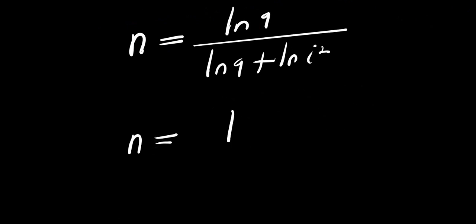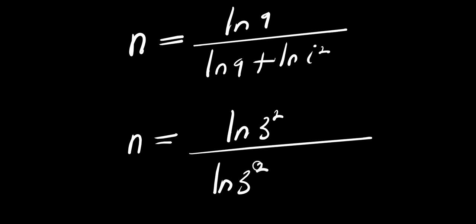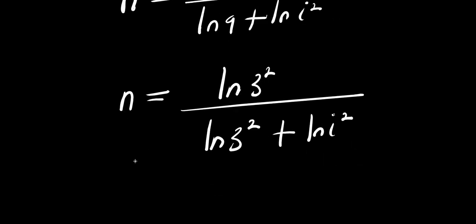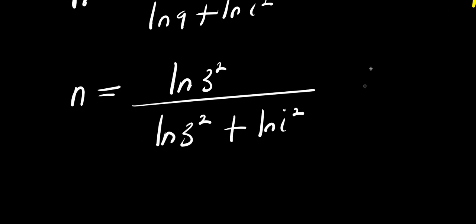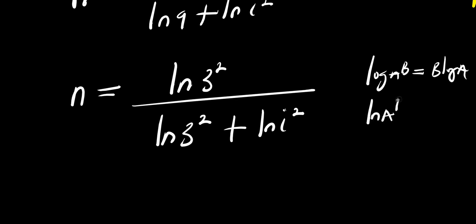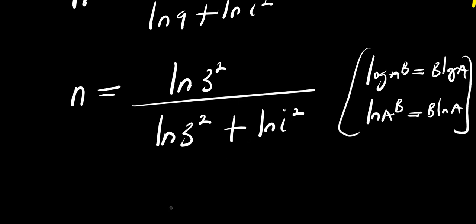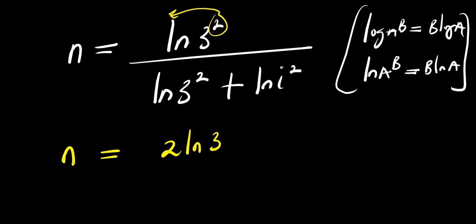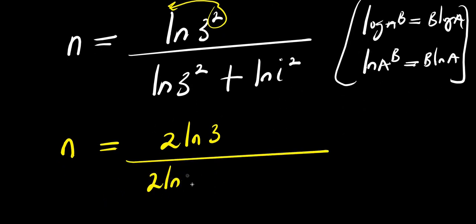From here, we can write n equals ln of 3 squared divided by ln of 3 squared plus natural log of i squared. Using the log power rule, log a power b equals b times log a, this becomes n equals 2 times natural log of 3 divided by 2 times natural log of 3 plus 2 times natural log of i.